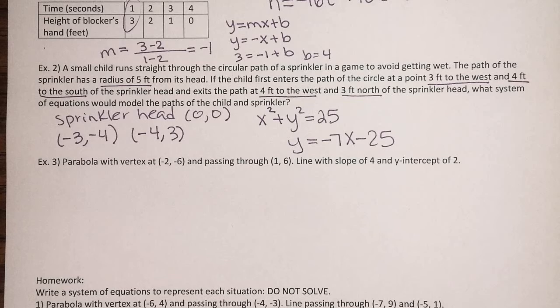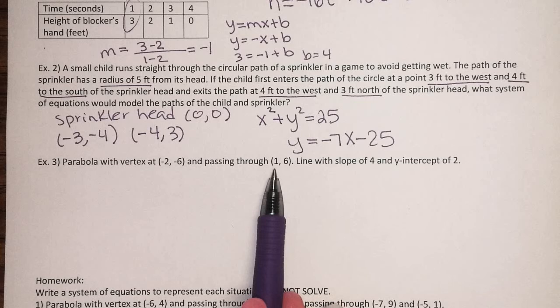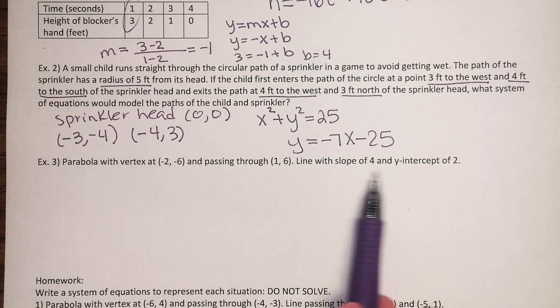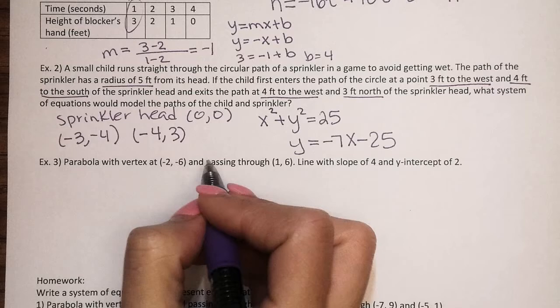And now for number 3, our last one, a parabola that has a vertex at negative 2, negative 6, and passing through the point 1 comma 6, so we need to write a quadratic for that, and then we need to write a line with a slope of 4 and a y-intercept of 2. So let's do the parabola.